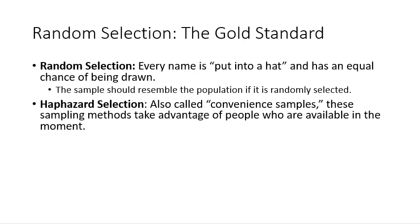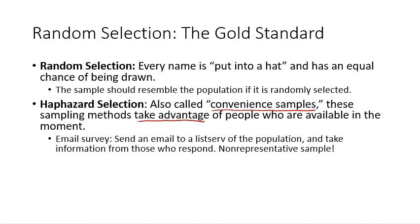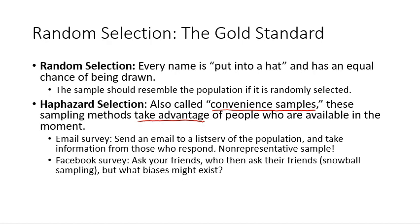More often, we use something that in your textbook they call haphazard selection. In other places, we call this convenience samples. And these take advantage of people or utilize data from people who are available in the moment. So, for example, we gave the email survey as one example of this. We send an email to a big listserv and we take information from those who respond. This is a non-representative sample because we have a different type of person who didn't respond. We could have a Facebook survey. We could ask your friends and they might ask their friends. That would be snowball sampling. But think about the biases that exist. Are your friends and your friends' friends in some way different from the population in general? I think we would conclude that this would be a biased sample.